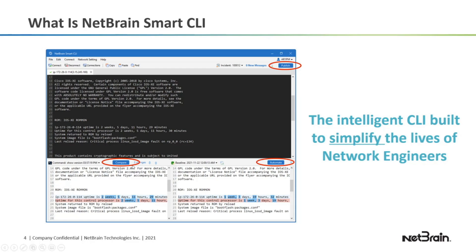Second, we have the compare functionality, which is very powerful. In this functionality, you can actually compare your live command output with some prior command output, even from five months ago. NetBrain will automatically compare it and then highlight the lines and the actual text that's different. I'll demo this shortly. The NetBrain Smart CLI was built to simplify the lives of network engineers through the power of automation and collaboration.